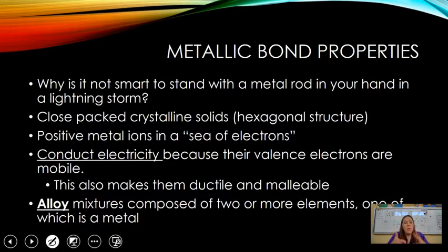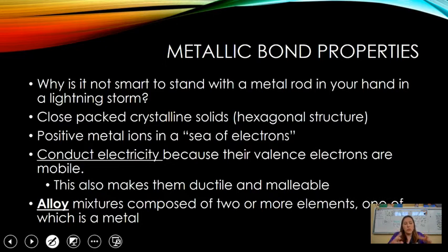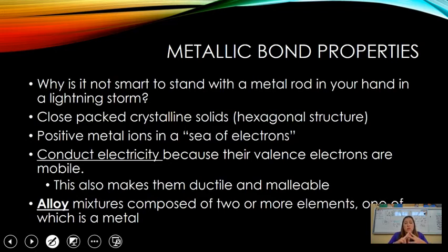Metallic bonds: metallic compounds are made up of strictly metals. That's why it's not smart to stand with a metal rod during a lightning storm — metal conducts electricity. Metal compounds are closely packed crystalline solids made up of positive metal ions in a sea of electrons. Electricity can flow readily through a metallic bond because the valence electrons are mobile. This also makes metals ductile and malleable because it allows electrons to slide past each other. An alloy is a mixture composed of two or more elements, one of which is a metal.